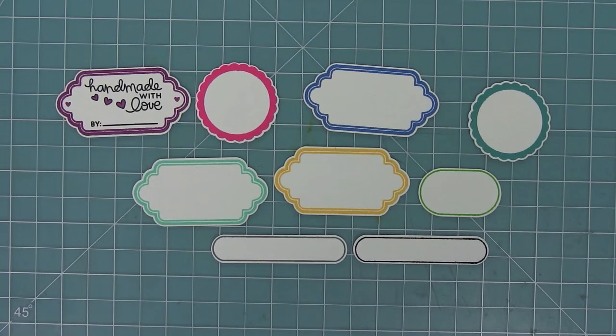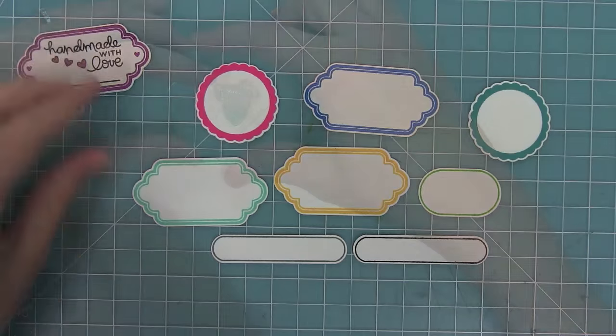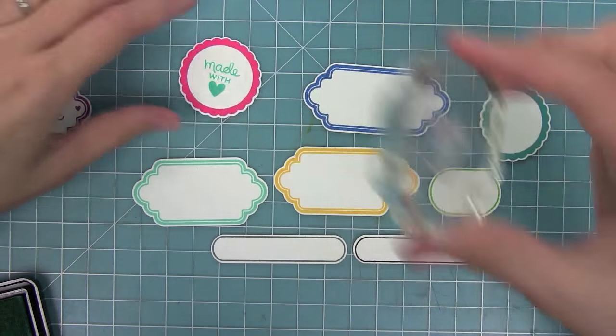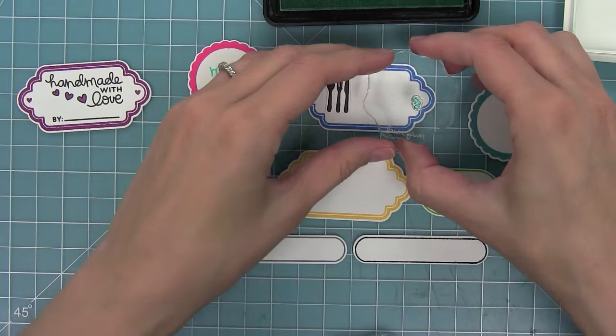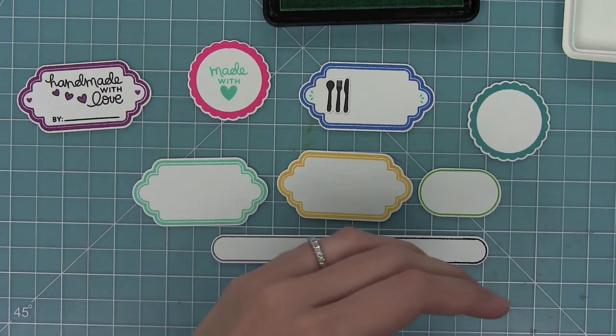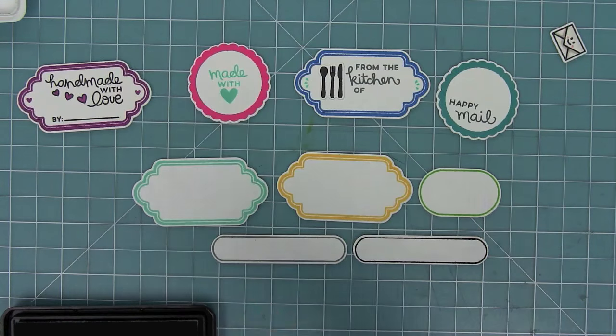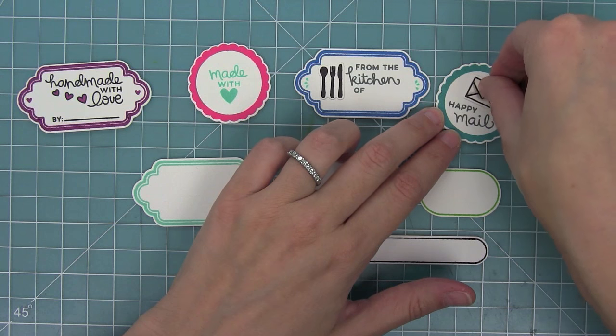Now I went ahead and stamped out a bunch of these labels in different colors, and I'm going to go ahead and start using some of the stamps from Just For You with the Just For You labels. So you can see how well they were sized to work together. I can use those little tiny accent pieces from Just For You labels in the corners, and then use the other stamps from Just For You to decorate everything.